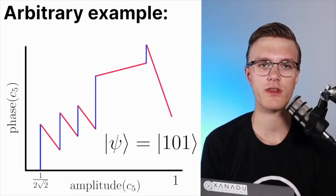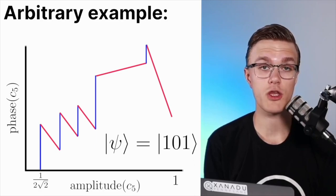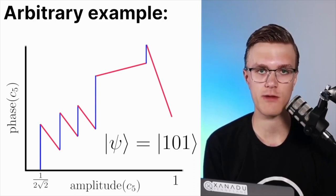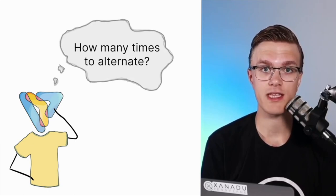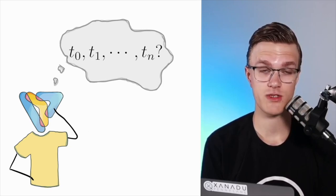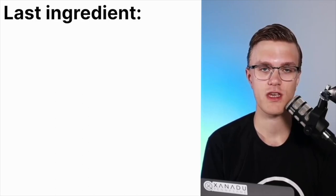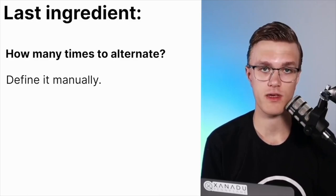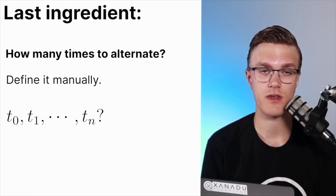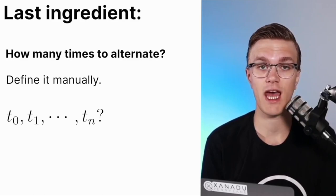Key to this intuition is that we assumed we knew how many times we needed to iterate between time evolving under the cost and mixer Hamiltonians, and that we knew what the optimal times were to time evolve under each Hamiltonian at each step. How do we know in general how many times we need to alternate and for how long? The answer is we don't — and this brings us to the last key ingredient of QAOA: it's an optimization algorithm. We generally specify how many times we iterate manually, and then we optimize those time angles numerically.